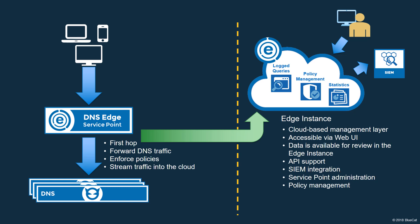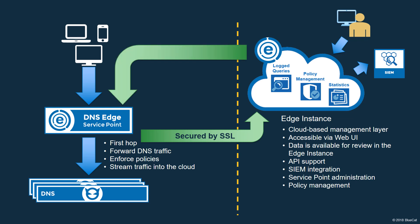Whenever an upgrade to Edge is available, it is sent to the customer's Edge instance. Every few minutes, Service Points contact the Edge instance. This communication is secured by SSL. During this communication, Service Points check for available updates to Edge. If any are available, the Service Point pulls down the updates. In addition, the Service Point checks for changes to policies and policy actions. When an administrator changes the address of any DNS servers to which the Service Point forwards queries, the Service Point also pulls this information from the customer's Edge instance.